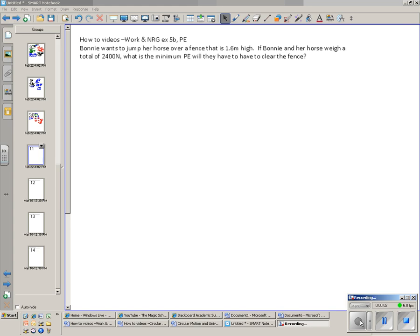This is an example problem for work and energy. This is example 5B on potential energy. We have Bonnie on her horse trying to jump over a fence that is 1.6 meters high. Bonnie and the horse together weigh 2,400 newtons. We're wondering what minimum potential energy she'll need to have her and the horse clear the fence.